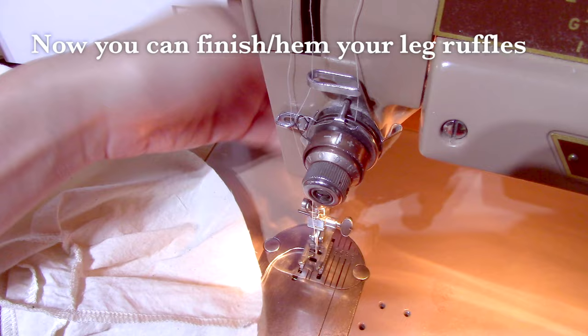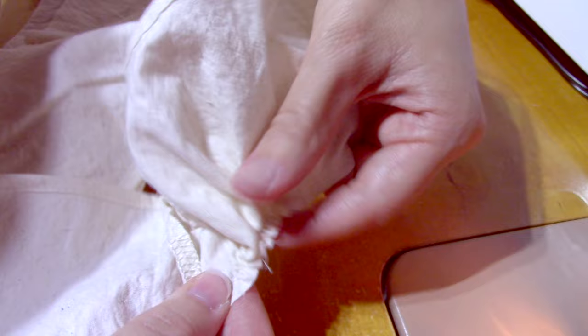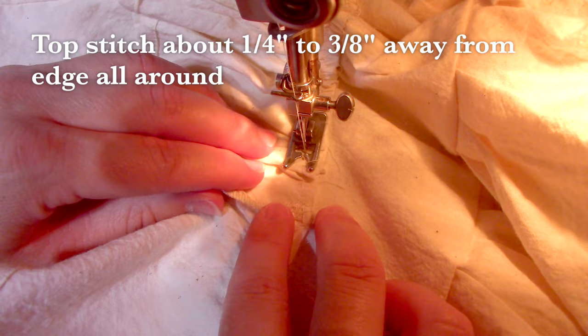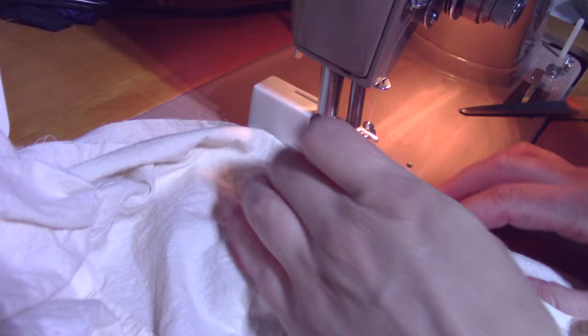Now you can use a narrow hem to finish the leg edges. I would also recommend finishing the bottom edges of each hip ruffle at this time. To attach the hip ruffles, I would recommend basting along the unfinished edge to gather them, then align the gathered edge with the line you drew. Topstitch about a quarter or 3/8 of an inch away from that edge. Once you're done with that, you can fold the ruffle edge down and topstitch again about 3/8 of an inch away from the top edge.